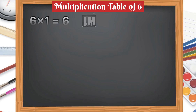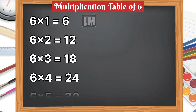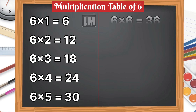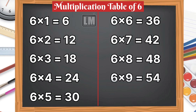Let's learn multiplication table of 6. 6 1s are 6, 6 2s are 12, 6 3s are 18, 6 4s are 24, 6 5s are 30, 6 6s are 36, 6 7s are 42, 6 8s are 48, 6 9s are 54, 6 10s are 60.